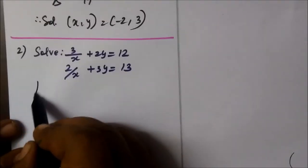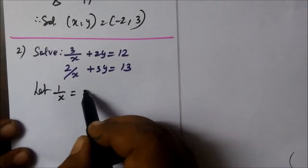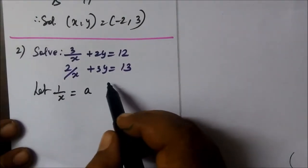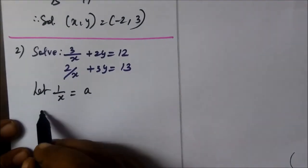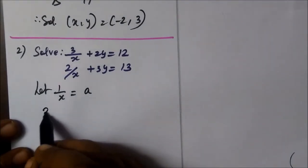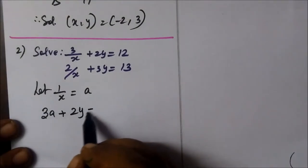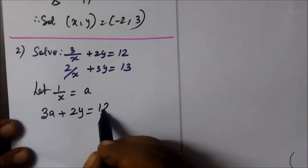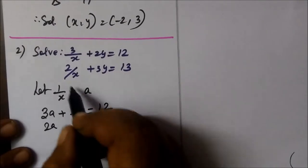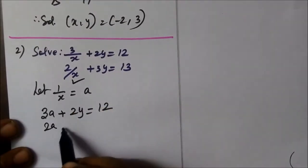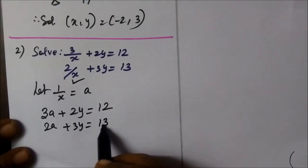Second question. Let 1 by x equal to a. So, 3a plus 2y equal to 12. Second equation: 2a plus 3y equal to 13.